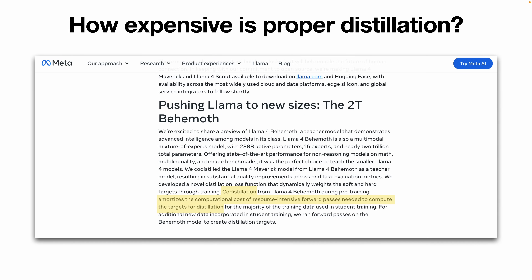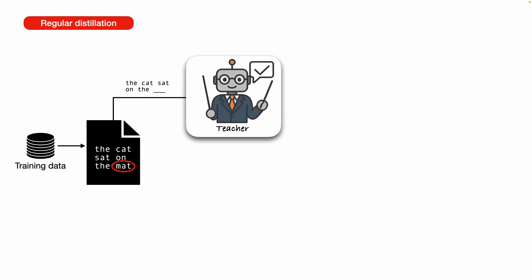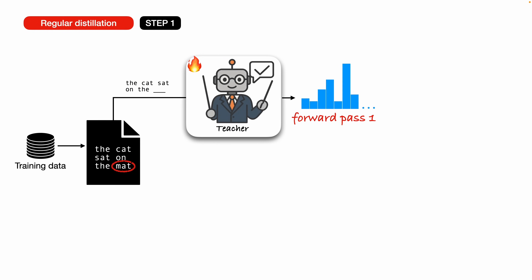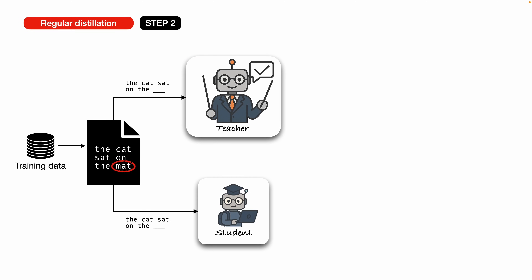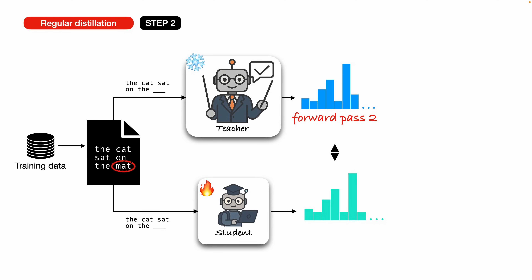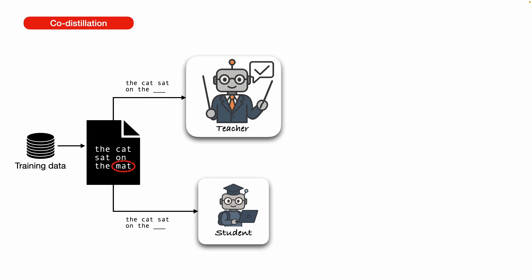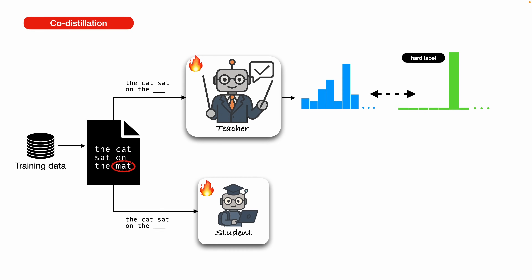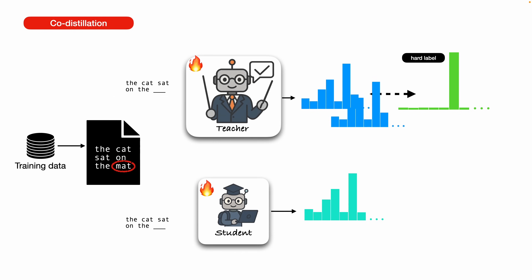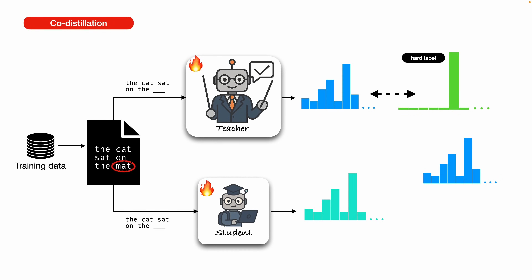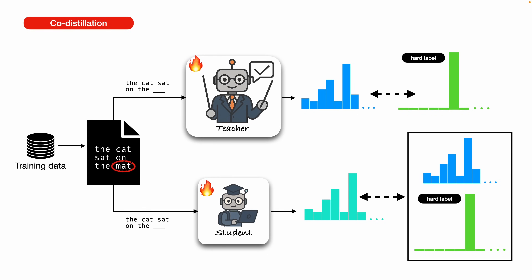In regular distillation, you need two forward passes per example — one during teacher training and one during student training. In step one, when the teacher is being trained, we need a forward pass to produce an output, which is compared against the ground truth label. In step two, when the teacher is frozen and the student is being trained, we need another forward pass through the teacher to generate soft labels for the student. In contrast, co-distillation — the trick used by Meta — merges the two steps into one. The teacher and the student are trained at the same time. The teacher produces its probability distribution and updates itself based on the hard labels, while the student produces its own output and immediately uses the teacher's output as a soft label. But the teacher isn't fully trained yet — its soft labels might be somewhat wrong. So early on, co-distillation can feel a little bit like the blind leading the blind. To compensate, we train the student on a combination of soft and hard labels.